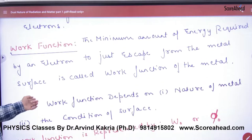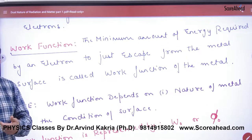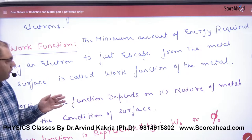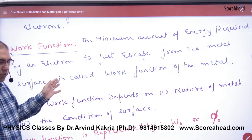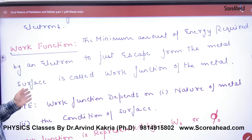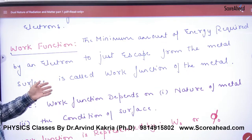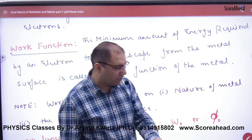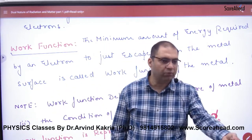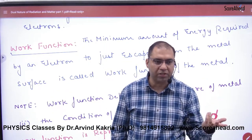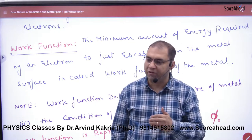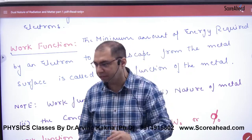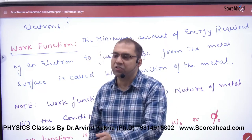Next is the work function. What is the work function? In chemistry, we have studied that the work function is the minimum amount of energy required by an electron to just escape from the metal surface. So, how much minimum energy do you have to give an electron so that it leaves the atom and goes out? That is the work function.